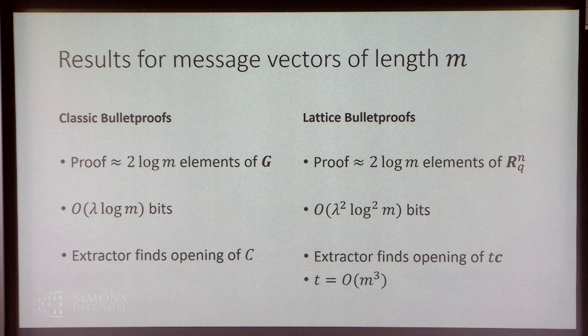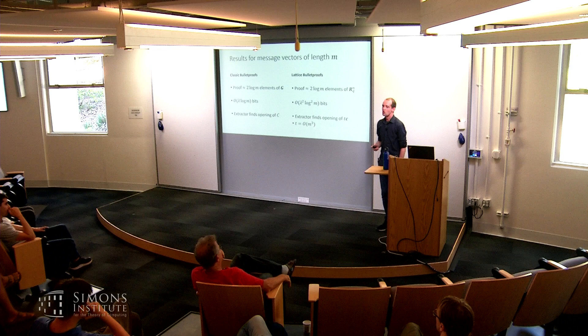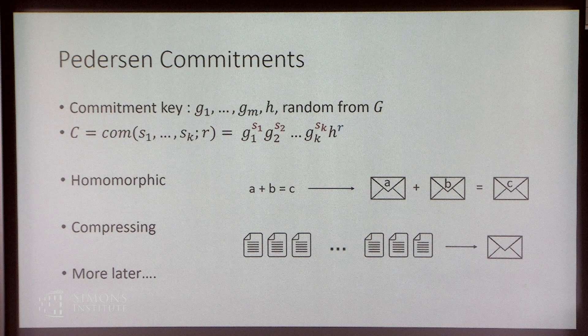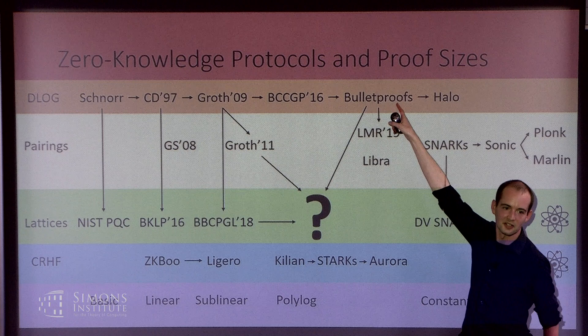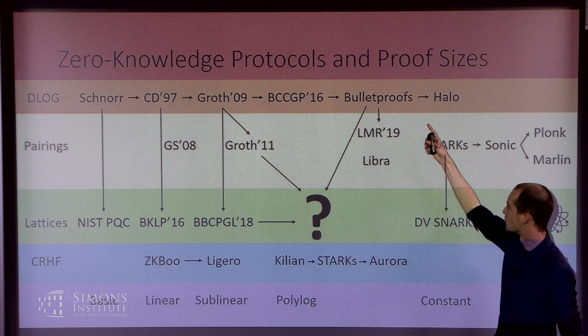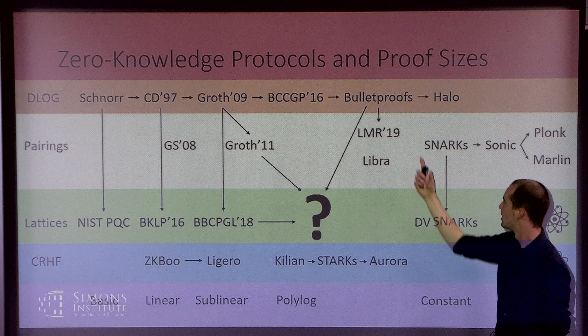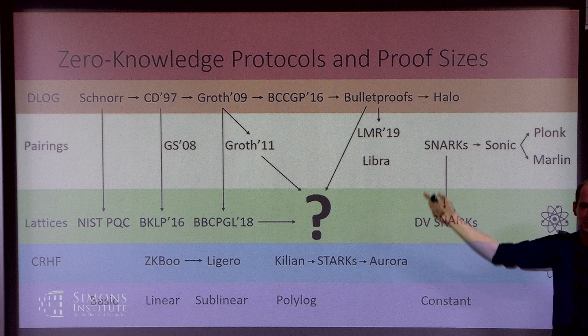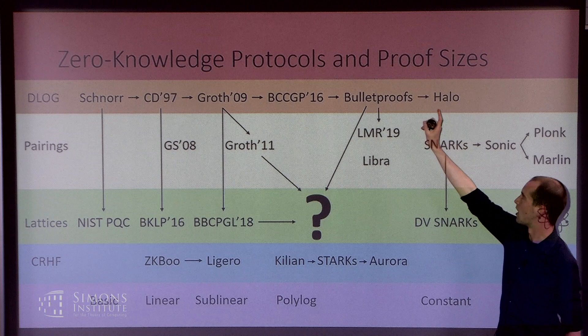Let me clarify what I mean by bulletproofs. Bulletproofs is a specific proof system — one of these zero-knowledge protocols based on the discrete logarithm assumption. You can prove knowledge of something like a constraint satisfaction problem of size n with a proof size of log n. So when I say bulletproofs, I'm referring to a particular protocol in a published paper on this diagram.